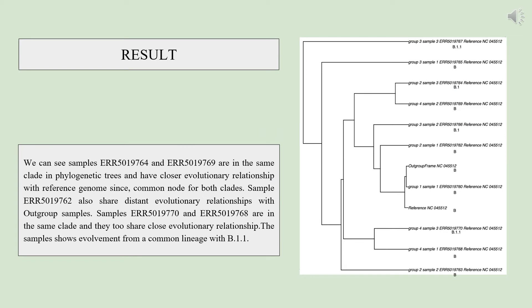The phylogenetic tree was obtained where samples ERR5019764 and ERR5019769 lying in the same clade have a closer evolutionary relationship with the reference genome, whereas ERR5019764 N2 shares a distinct evolutionary relationship with the outgroup samples. Samples show evolvement from a common lineage with B.1.1.1.